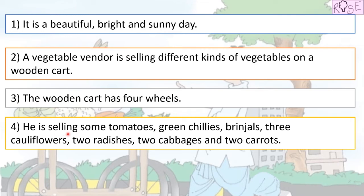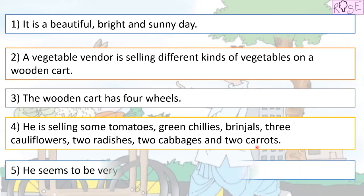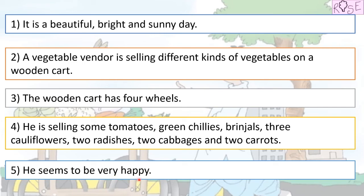He is selling some tomatoes, green chillies, brinjals, three cauliflowers, two radishes, two cabbages and two carrots. He seems to be very happy. Yes, the vegetable vendor looks very happy. Wow!